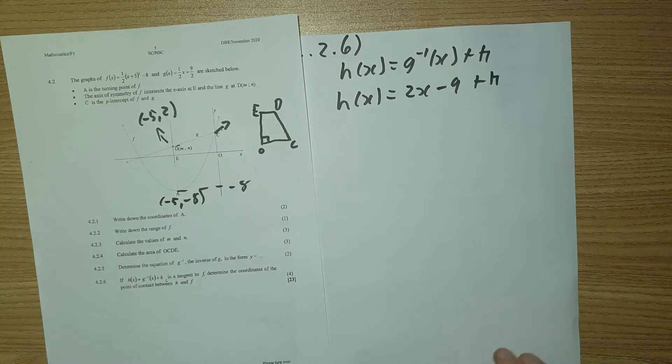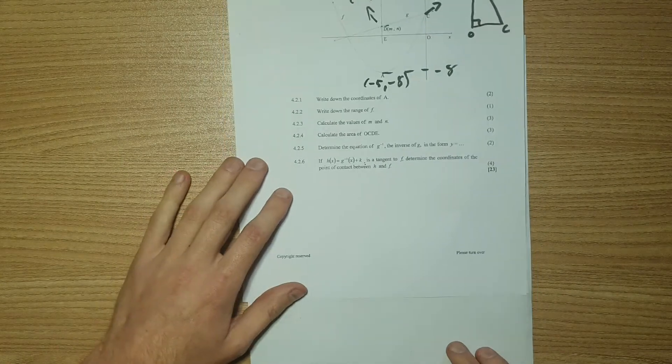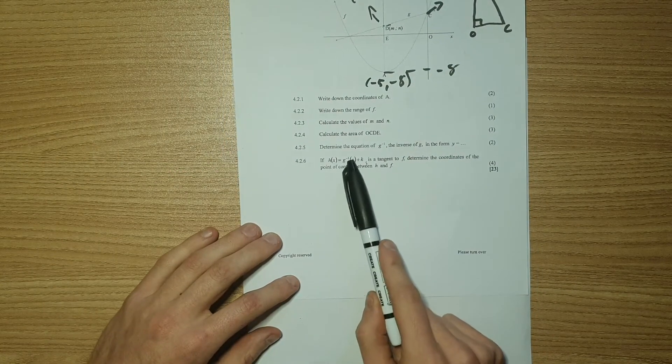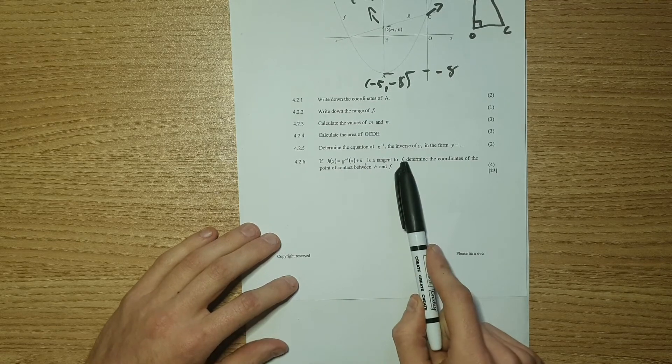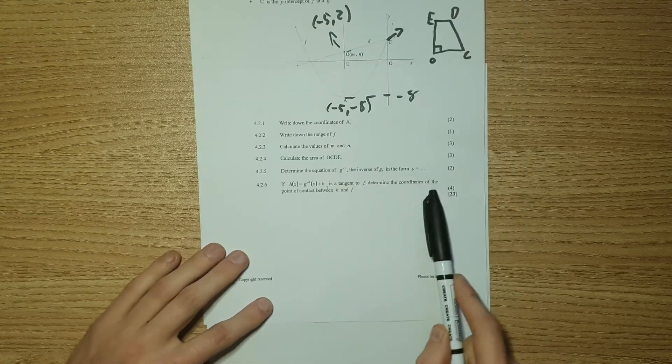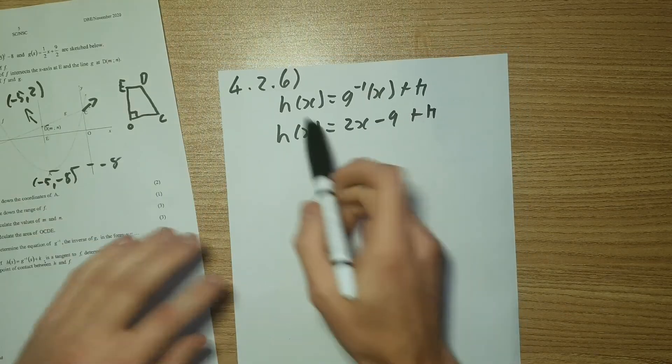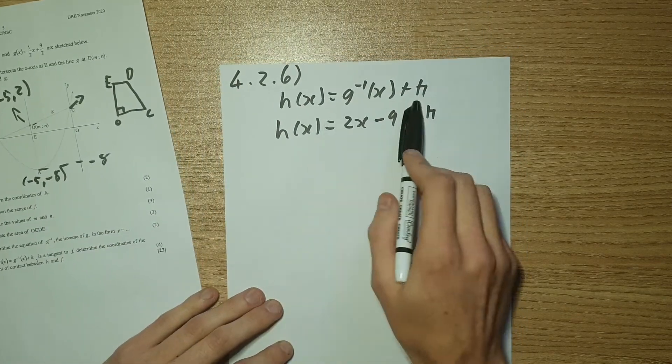Looking at 4.2.6, it says that we have H of X, which equals to G, the inverse of G plus K is a tangent of F of X. Determine the coordinates, points of contact between H and F. So H of X is given by that. So I've substituted my inverse in, which gives me this formula.